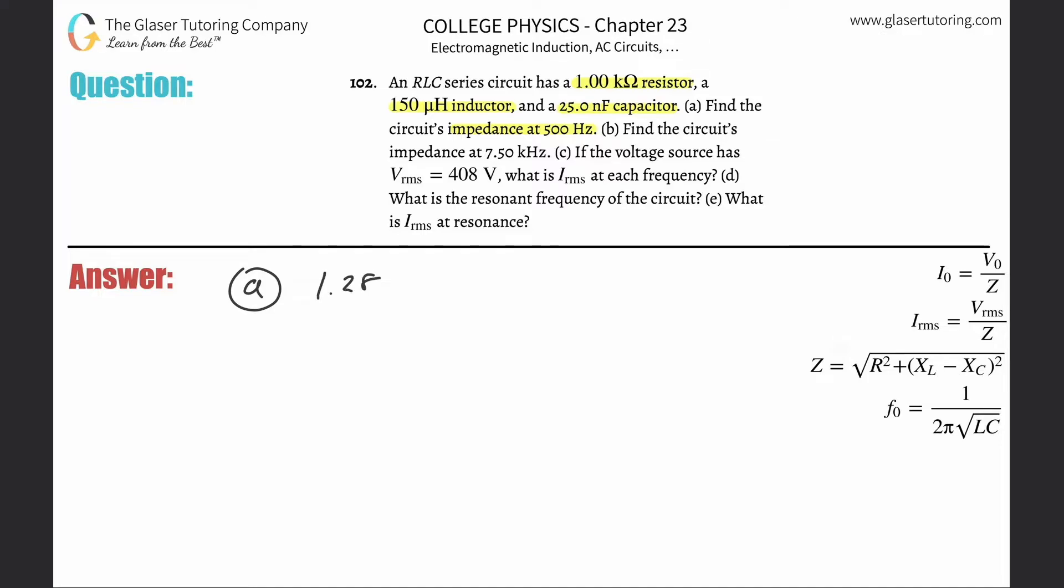So for letter A, the answer should be 1.28 times 10 to the fourth ohms. For letter B, the answer should be 1.31 times 10 to the third ohms.